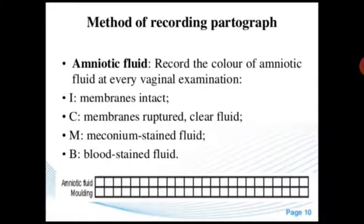Method of recording partograph — amniotic fluid: record the color of amniotic fluid at every vaginal examination. 'I' means membrane intact, 'C' means membrane ruptured, 'A' means clear fluid, 'M' means meconium-stained fluid, and 'B' means blood-stained fluid.